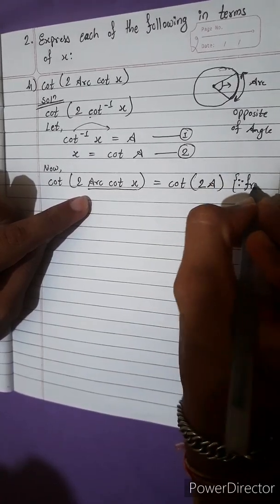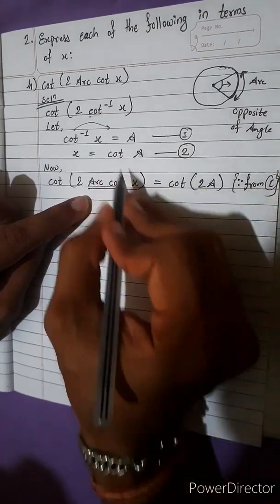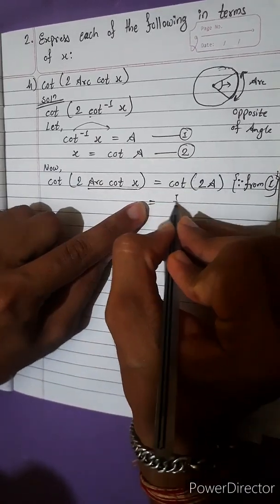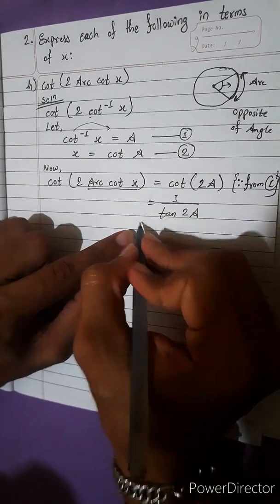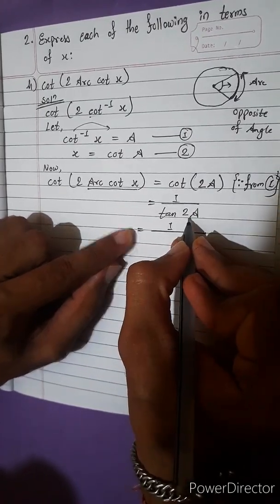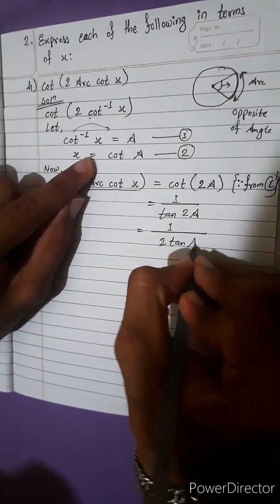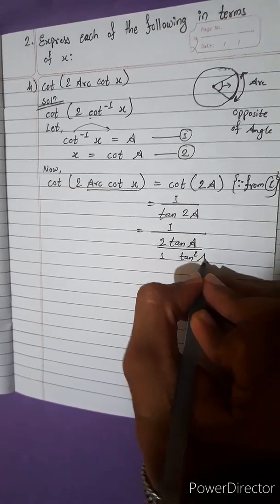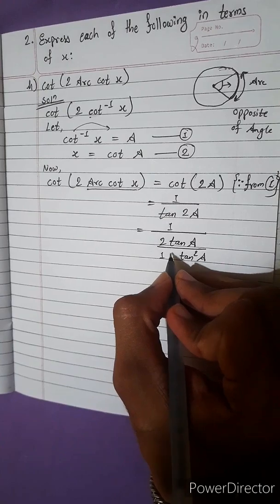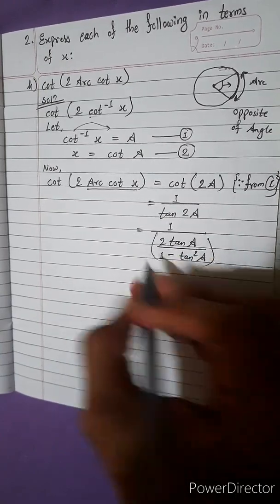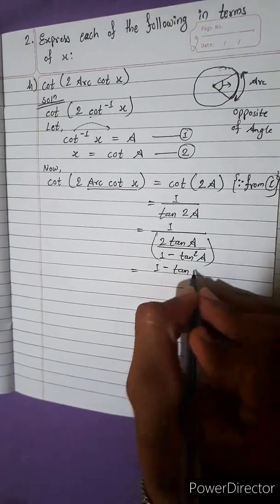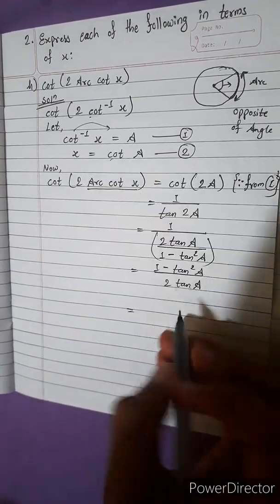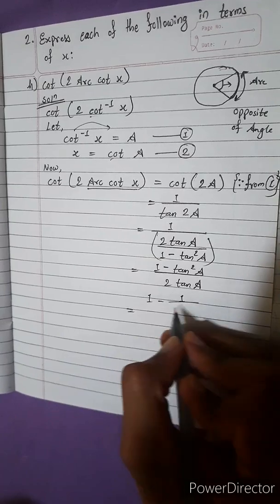From equation 1, cot inverse x means cot inverse x, and cot inverse x means a, so cot 2a equals 1 by tan 2a. Now we know the formula of tan 2a — in terms of cot, we need it. In terms of tan: 2 tan a divided by 1 minus tan squared a. In tan there will be minus.